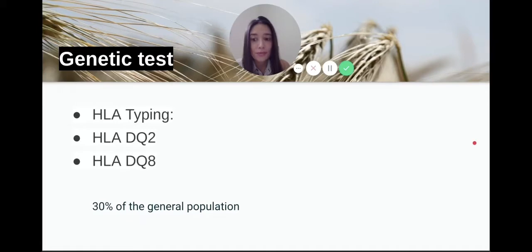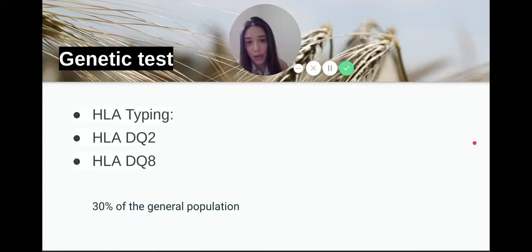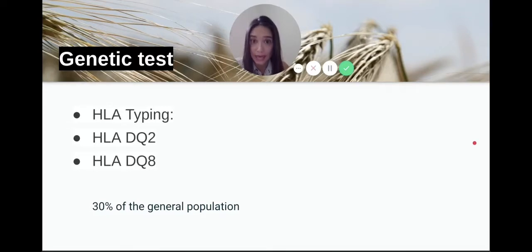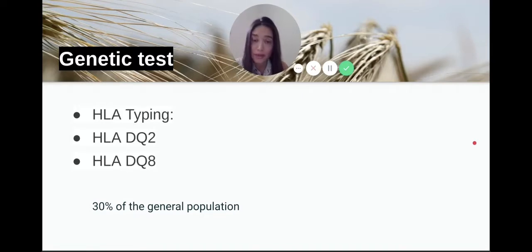Here's an interesting thing: 30% of the general population have this genetic mutation, and some sources even mention 40% to 45%. However, not everyone develops celiac disease due to the genetic mutation alone. One in about 100 people in the U.S. have been diagnosed with celiac disease, and about 85% of them are undiagnosed — 85% of U.S. celiac patients are going around without a diagnosis.